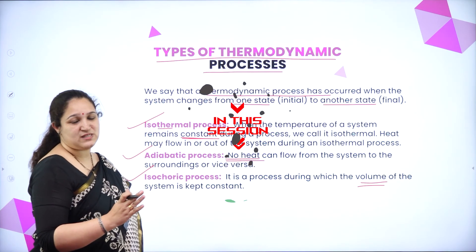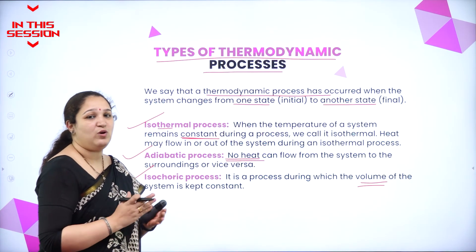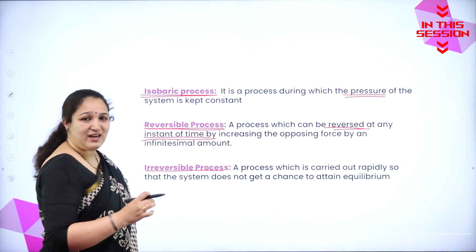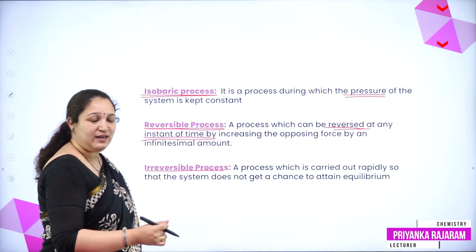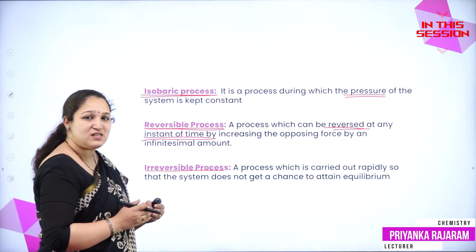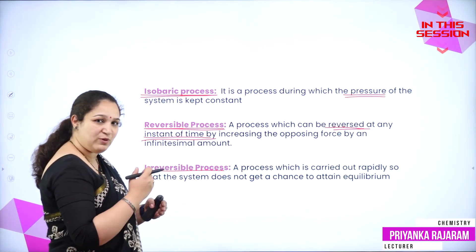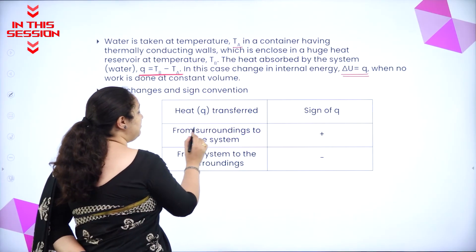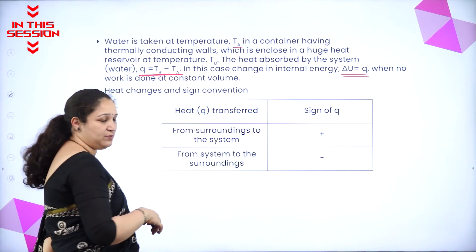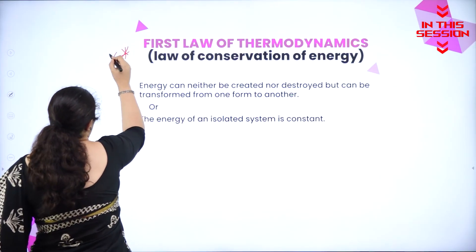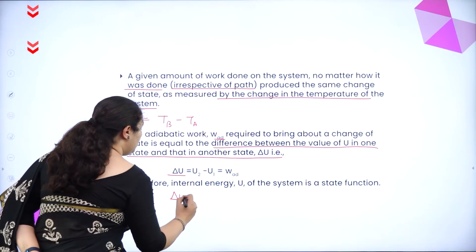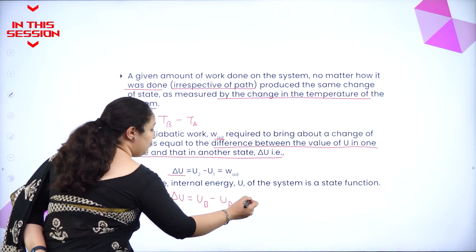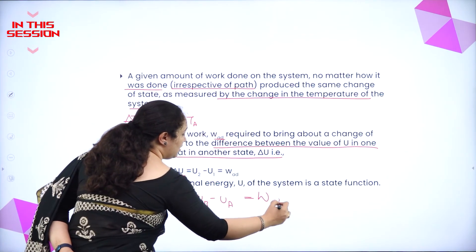Only volume of the system is kept constant, then we call it as the isochoric process. The process is carried out so rapidly that you cannot reverse that — it has to happen only from one direction to the other. The heat is transferred from the surrounding to the system. This is very very important. Delta U we took it as UB minus UA, which is nothing but equal to work done.